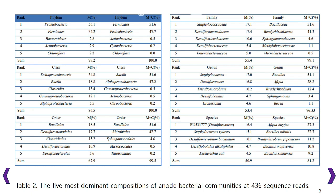Magnesium plus Chitin was dominated by Firmicutes at 51.6% and alpha-proteobacteria at 47.2%. The graphite anode was dominated by delta-proteobacteria at 83.5% in graphite and 95.9% in graphite plus Chitin.